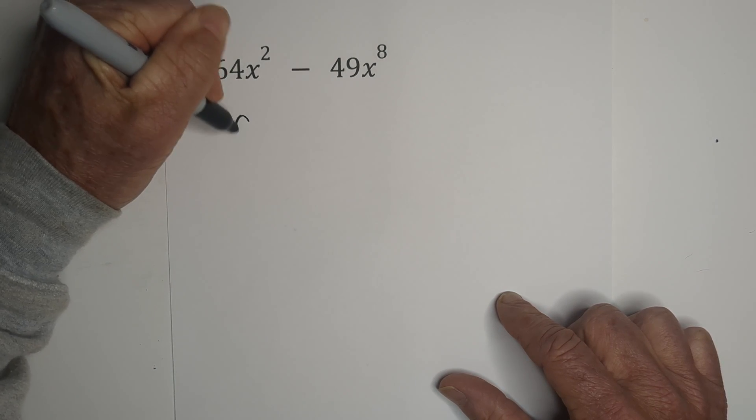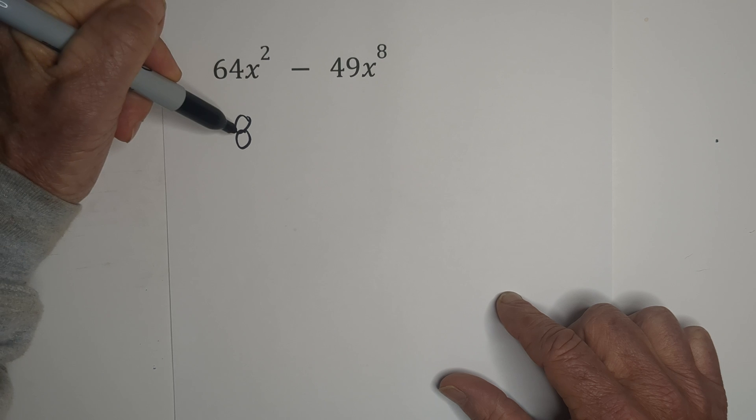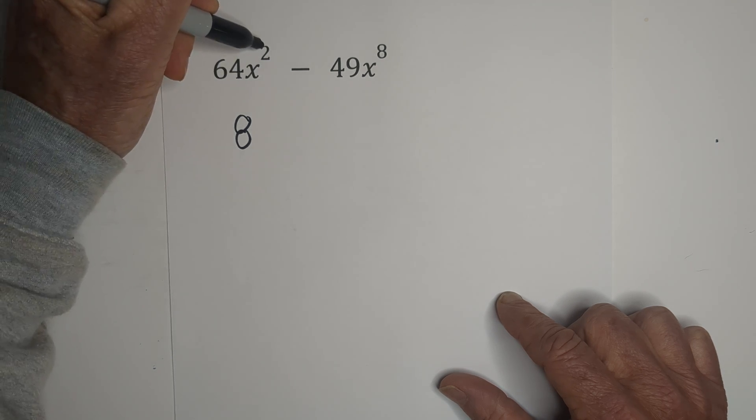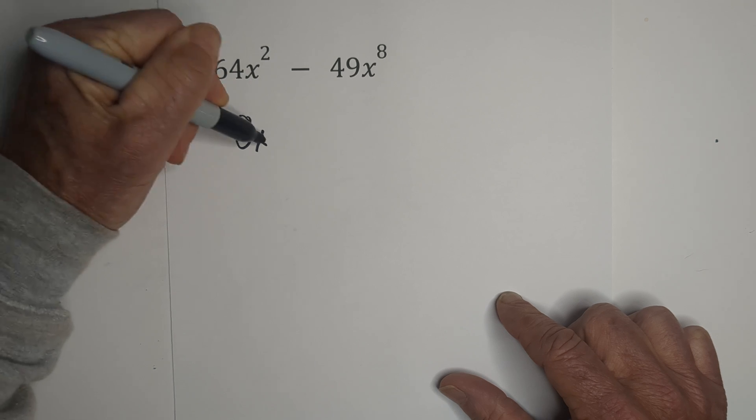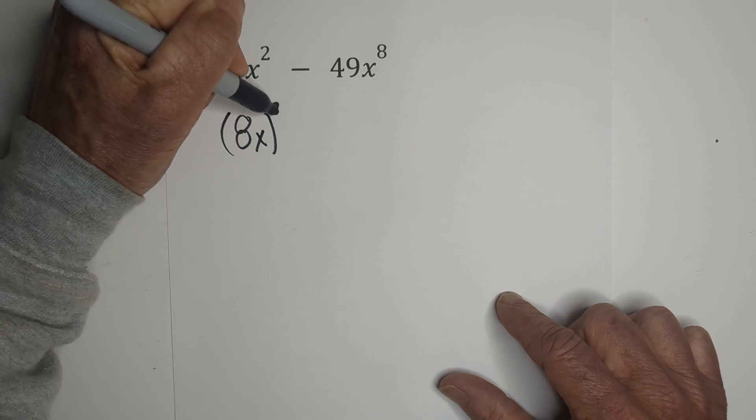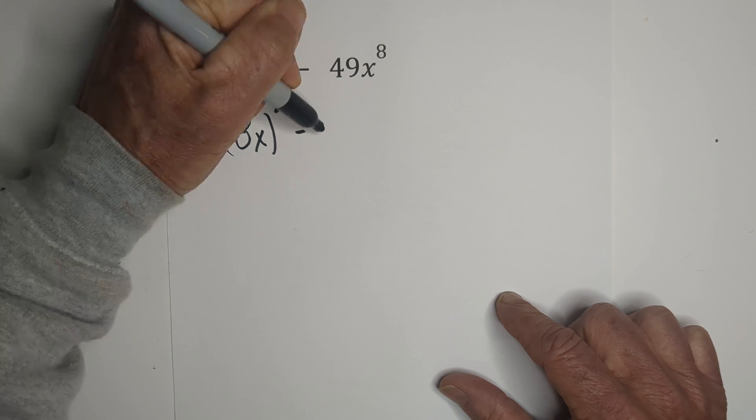So we have 8. What we're going to do is we're going to take the square root of 64, which is 8, and then we're going to divide the exponent by 2. So 2 divided by 2 is 1. So I'm going to rewrite it like this, and then we have the square root of 49 is 7.